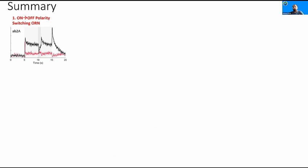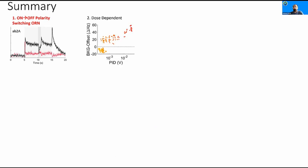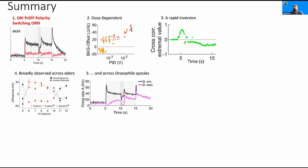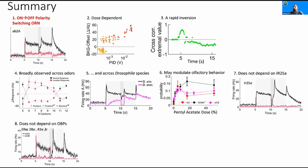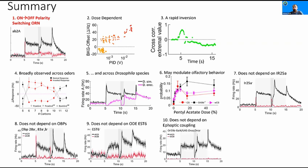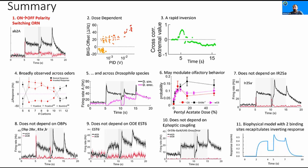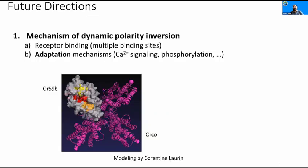In summary, today I showed a novel phenomenon where a single olfactory receptor neuron expressing a single olfactory receptor is able to flip its polarity from on to off when a single odorant is applied. This phenomenon is dose dependent and a quick process. It is broadly observed across ecologically relevant odorants, conserved for at least 10 million years, and can modulate behavior. It doesn't depend on the extra receptor IR25A, the three most abundant OBPs, the odor degrading enzyme esterase 6, or ephaptic coupling between neurons. A biophysical model with two binding sites is able to recapitulate the data.